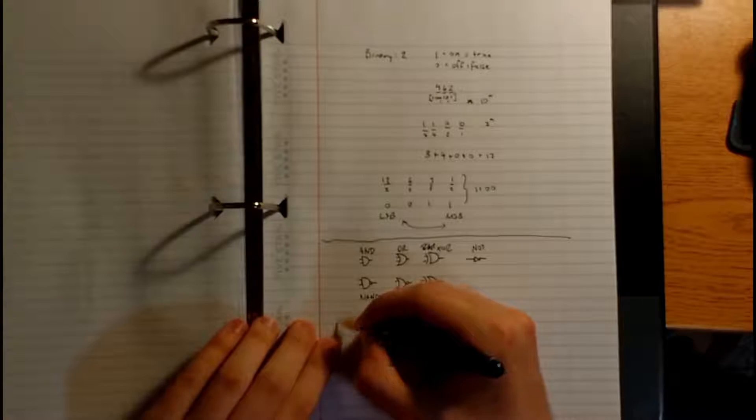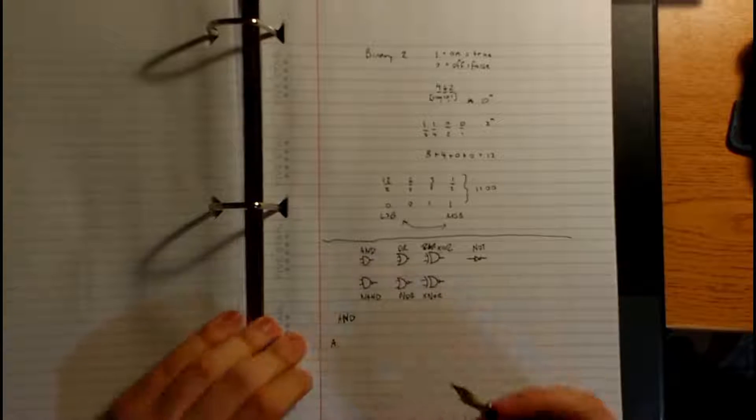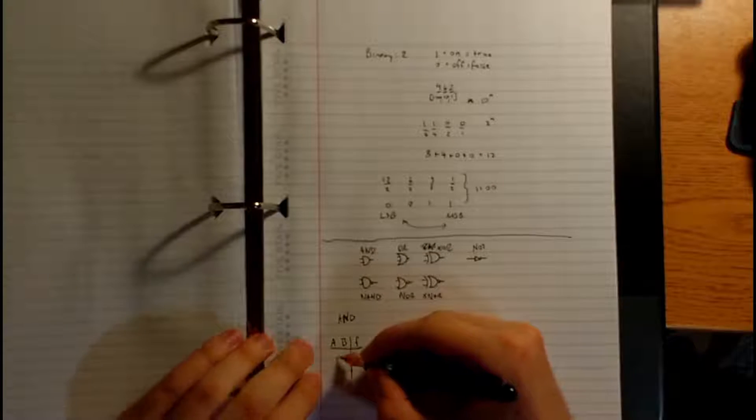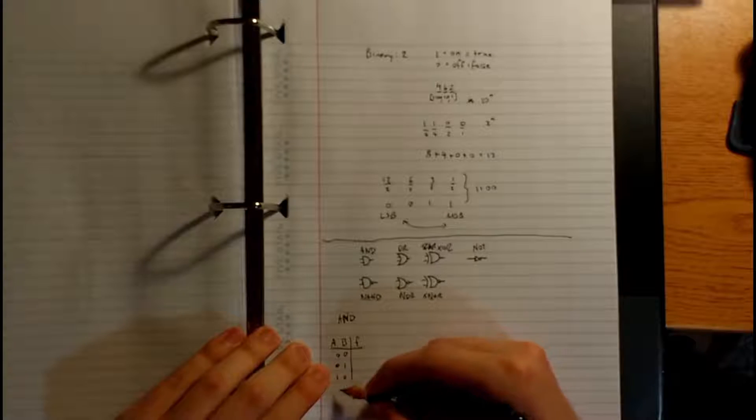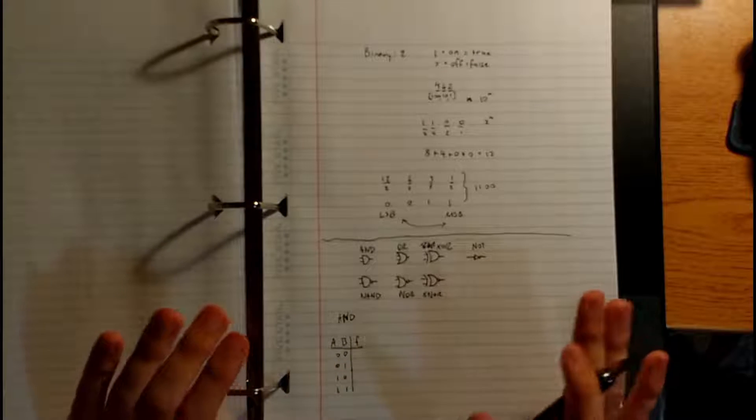So let's flesh this out with a truth table. A truth table is a really easy way to visualize what all the possible outputs of a circuit can be. So let's start out with an AND. So let's have our element A, or our variables A, B, and F for our output. And then let's just come up with all the possible combinations for A and B. So 0, 0, B can be 1 and A can be 0. A can be 1 and B can be 0, and then they can both be 1. So as you can tell, this is just counting up, as if A and B were combined to form a 2-bit binary number.